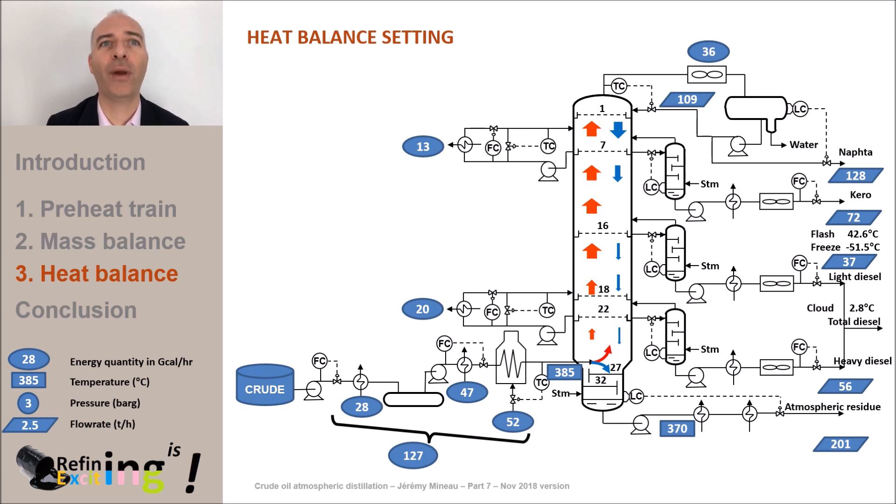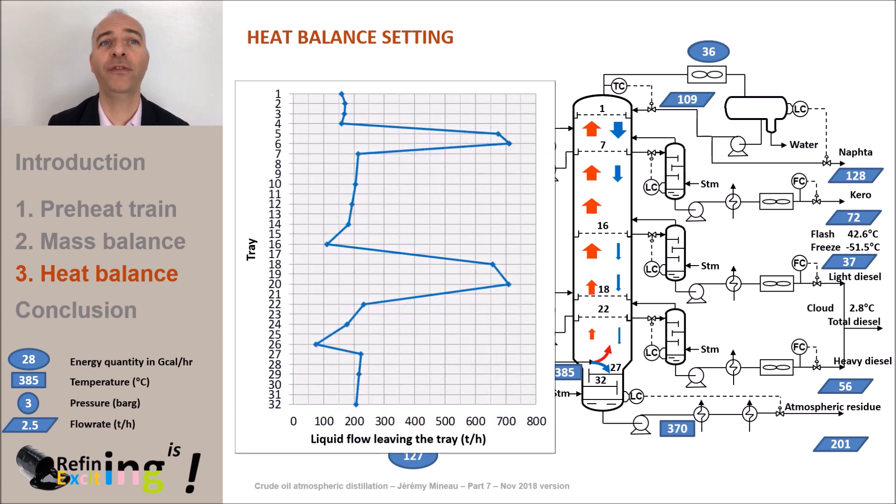When we have a look at the liquid flow rate profile in the column, we see that the flow of liquid that leaves the tray above the feed tray is 75 tons an hour. This quantity of liquid comes from the gas coming out of the furnace which then has been condensed and finally is leaving the tray above the feed tray. So this amount of liquid can be seen as an extra quantity of gas compared to the total amount of liquid that has been withdrawn from the tower. I mean naphtha, kero and diesel. We call this flow the overflash.